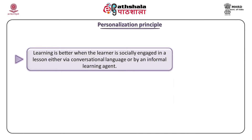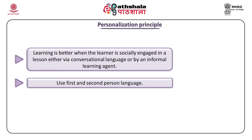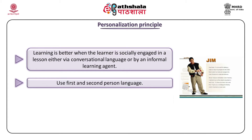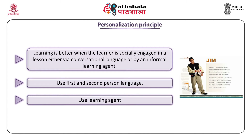Learning is better when the learner is socially engaged in a lesson either via conversational language or by an informal learning agent. While in a conversation, you are expected to listen and respond in a meaningful way, which requires you to concentrate your attention, process what is said, and generate a meaningful response. While writing the script for your e-lesson, use first and second person construction — for example, a dialogue such as 'Hello friends, are you ready to learn about legal and ethical issues in using ICT?' In one program designed to teach reading comprehension at a fourth-to-sixth grade level, the agent Jim is introduced throughout the program to show readers comprehension strategies. Learning is better when the learner is socially engaged, here done by introducing a learning agent.